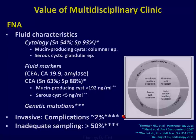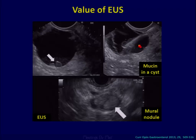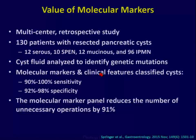Unfortunately, EUS works in about 50% of cases. When it works, it can help you distinguish mucinous cystic neoplasms by looking at fluid biomarkers and genetic mutations. But oftentimes the sample is inadequate. There is a lot of interest in developing molecular biomarkers that improve sensitivity and specificity for detecting mucinous neoplasms and can help reduce the number of unnecessary operations.